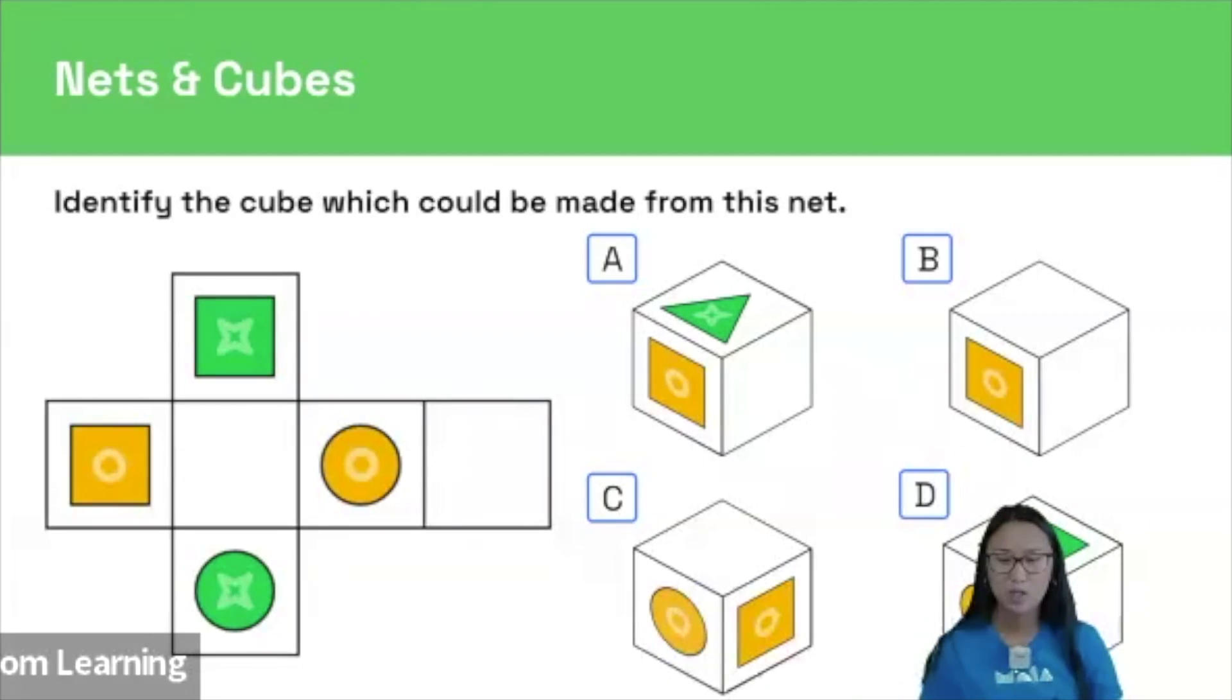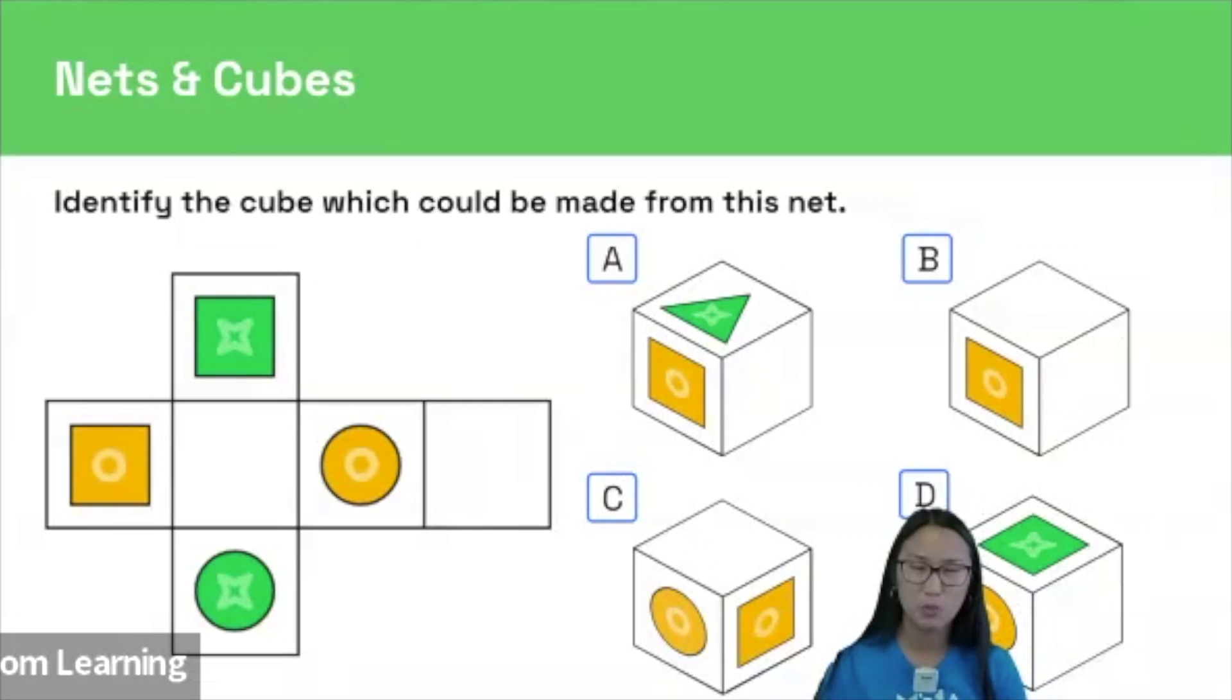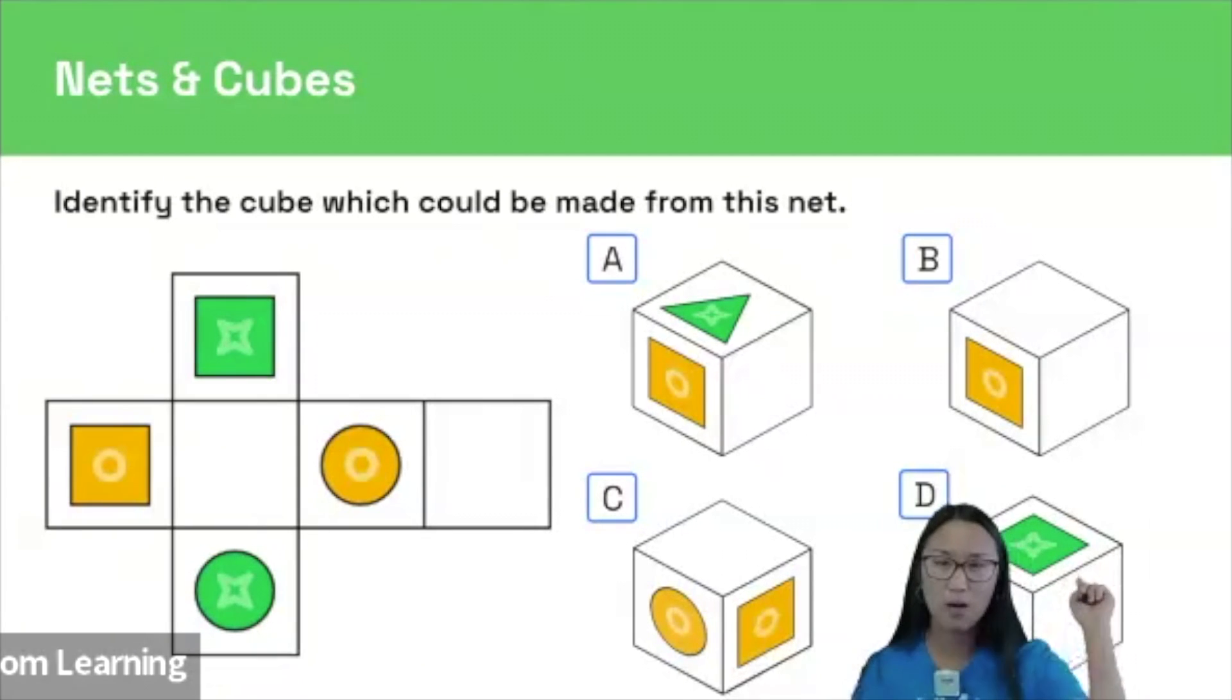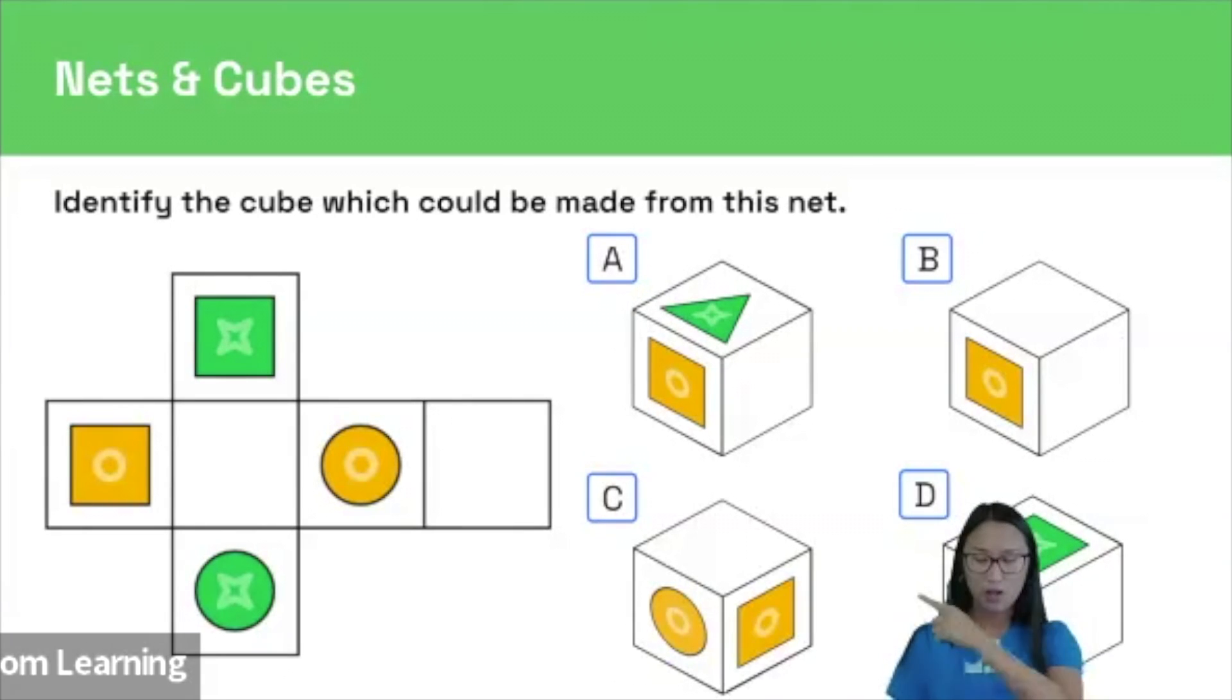Going back now to the very first example question we saw, let's apply the rules we've just learned. So we know that we can rule out A instantly because it violates the dud rule. If we look at our net, there's no green triangle, so our answer cannot be A.